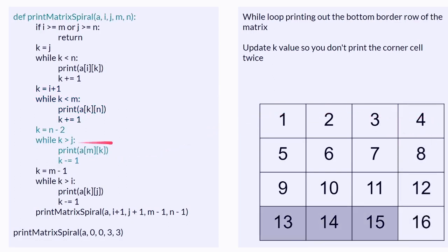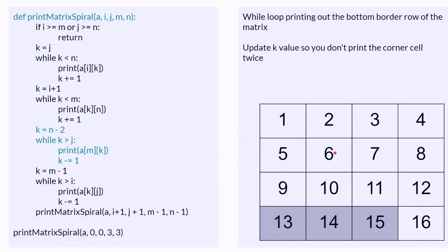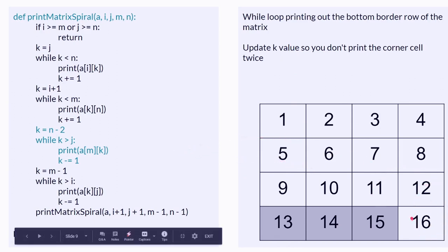And then here, you print the bottom part of the matrix in the while loop, where K is still, you miss it so you don't hit the corner.